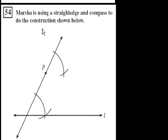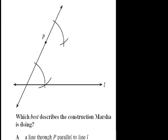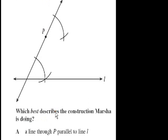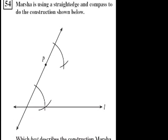Marsha is using a straight edge and compass to do the construction below. Which best describes the construction Marsha is doing? So I assume when they say construction, she's drawing something. It looks like she's taking her compass. She probably put one of the points here. She put one of the points there, and then she kind of drew this arc. Then it looks like she put the point there, and then she drew that arc. And then she put the point here, and drew that arc. And then put the point there, and drew that arc.